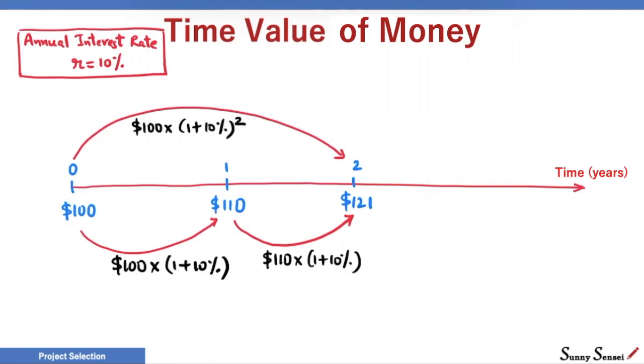$110 is the future value of 100 after one year. $121 is the future value of 100 after two years. $100 is the present value of both numbers: $110 after one year and $121 after two years.